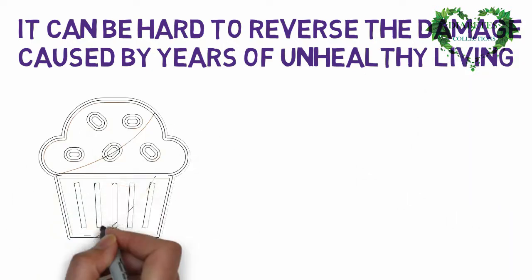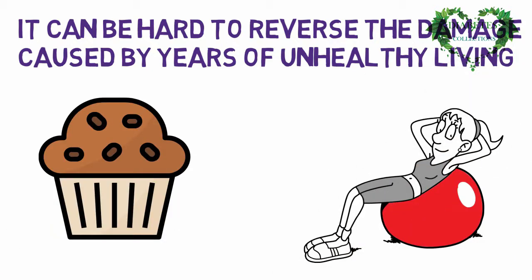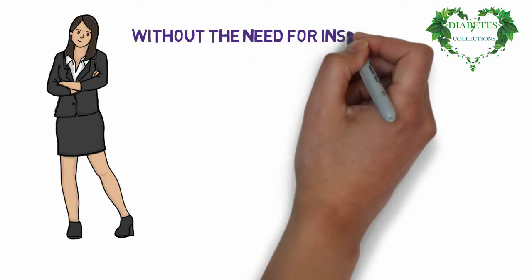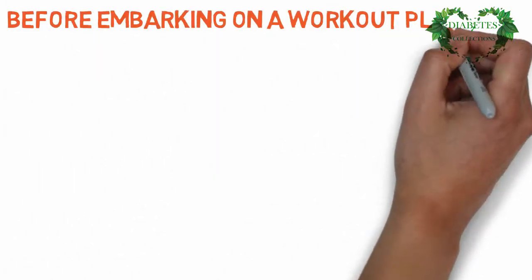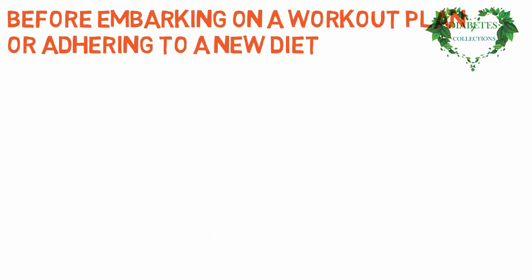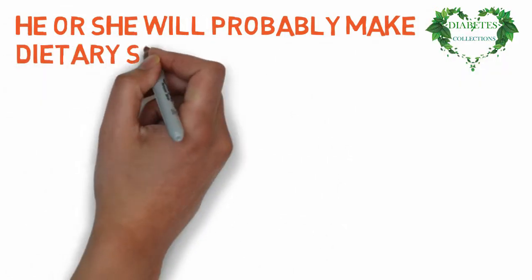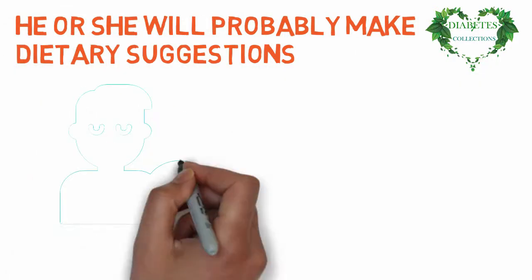By changing the way you eat and exercise, you can help control your disease and lead a fairly normal life without the need for insulin-regulating medicine. Before embarking on a workout plan or adhering to a new diet, you should first consult your doctor. He or she will probably make dietary suggestions and will usually refer you to a dietitian.